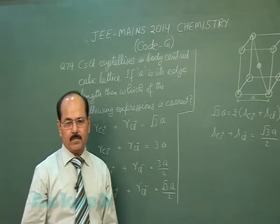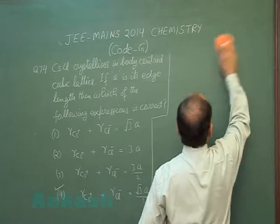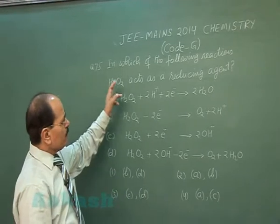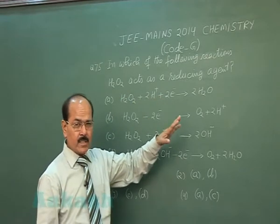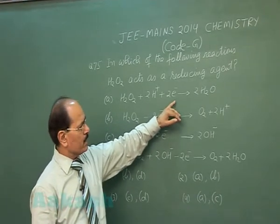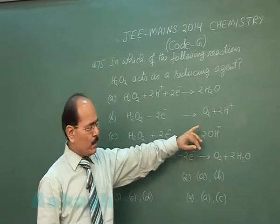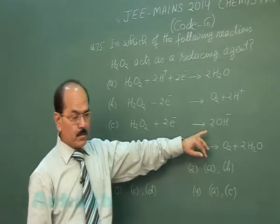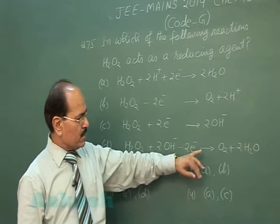Question number 75: In which of the following reactions does hydrogen peroxide act as a reducing agent? The four reactions are: (A) H₂O₂ + 2H⁺ + 2e⁻ → 2H₂O; (B) H₂O₂ loses 2 electrons to give O₂ and 2H⁺; (C) H₂O₂ gains 2 electrons to give 2 OH⁻; (D) H₂O₂ + 2H⁺ − 2e⁻ → O₂ + 2H₂O.